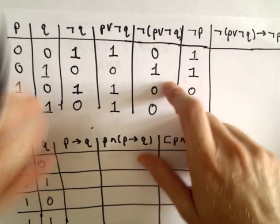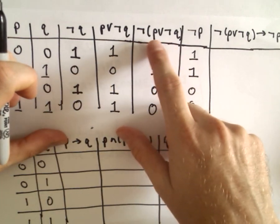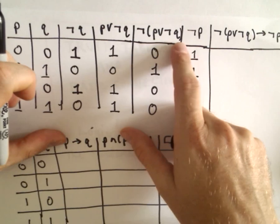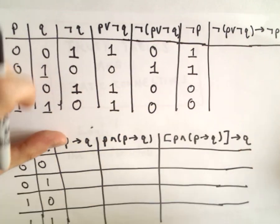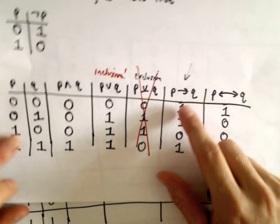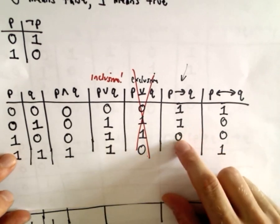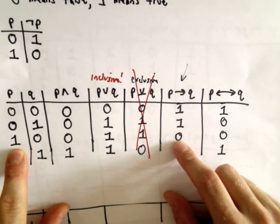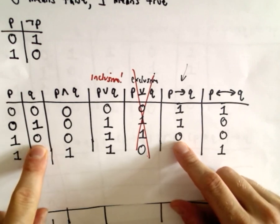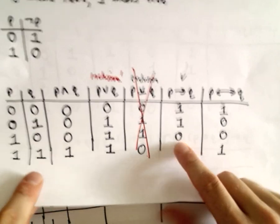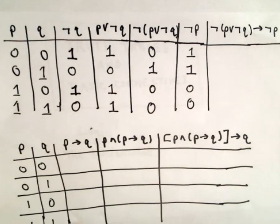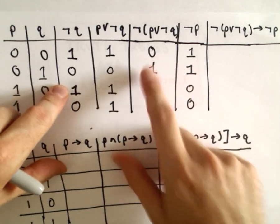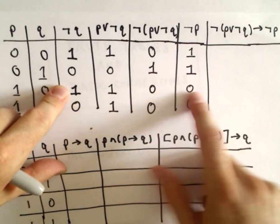Okay, so now we've got this implication. We've got the negation of P or not Q, and we want to know if that implies not P. So, again, for an implication, the only time our implication is false is if the first statement is true but the second statement is false. So I'm basically looking for anywhere where I have a one and then a zero.